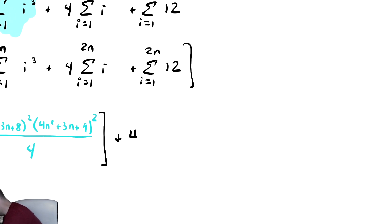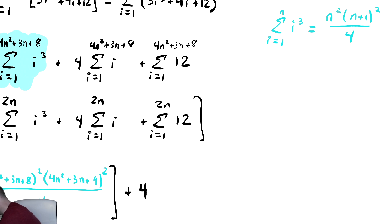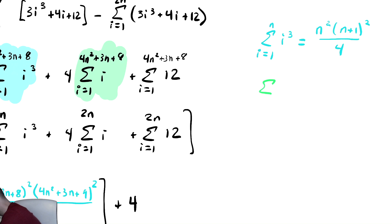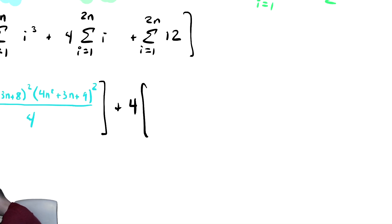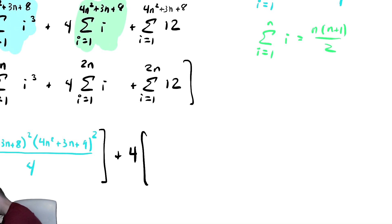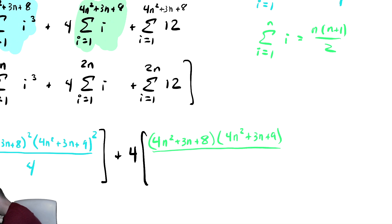Plus 4 times the sum of i formula: the sum from i equals 1 to n of i is n times (n plus 1) divided by 2. Using that formula with top bound 4n squared plus 3n plus 8, this is (4n squared plus 3n plus 8) times (4n squared plus 3n plus 9) divided by 2.